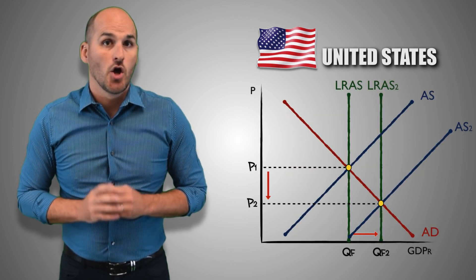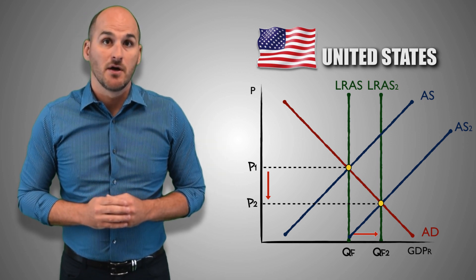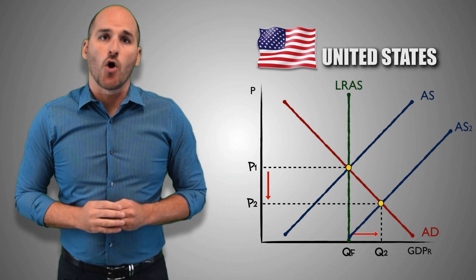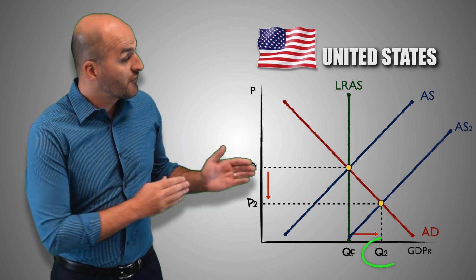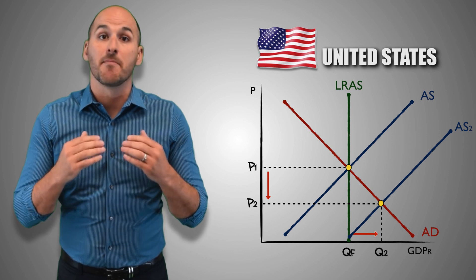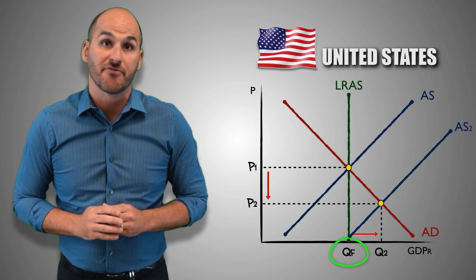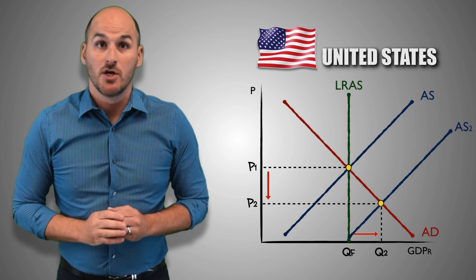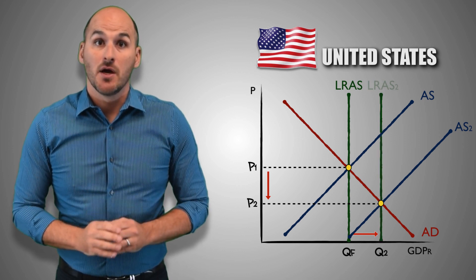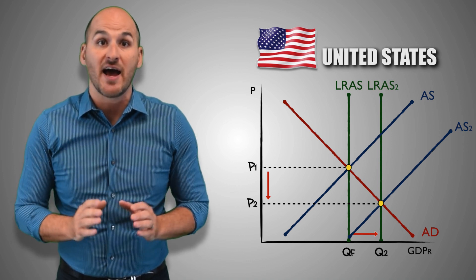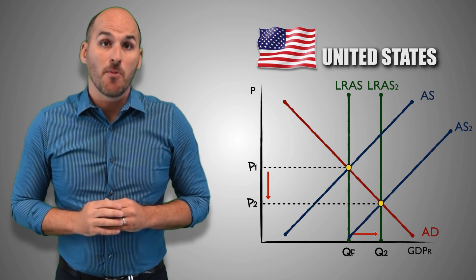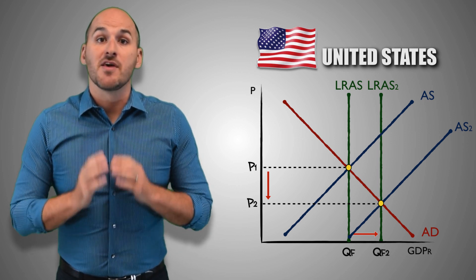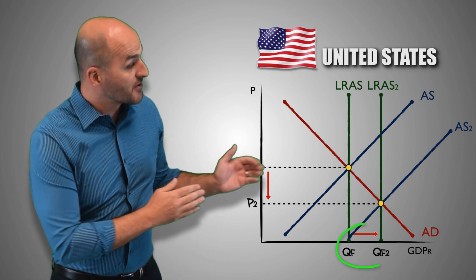Notice that the United States economy experienced an increase in real GDP output but is not in a GDP gap. If this increase in productivity had only affected aggregate supply in the short run, the United States would have opened up an inflationary gap, producing a real GDP output of Q2 — greater than its potential at QF — and the economy would eventually overheat. But because the assembly line changed productivity in the long run, Q2 is no longer unsustainable; it's the new quantity of full employment. Instead of a GDP gap, the American economy is in a new long-run equilibrium with greater output and deflated prices.